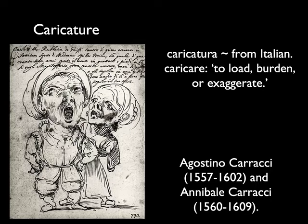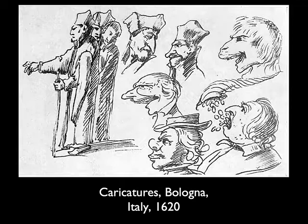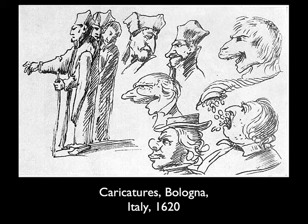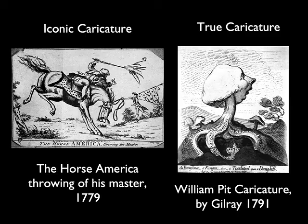The Caracci brothers were the first known to really popularize this idea of caricature. Here you see some caricatures from 1620 Bologna — the idea of the glutton, the idea of avarice. We start to see the human form sort of changing into more animal-like characteristics: not just distorting the human form, but making someone look like something less than human.